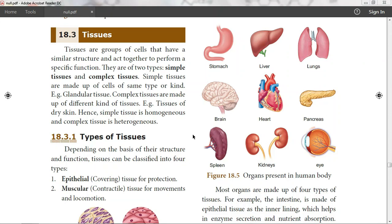18.3 Tissues. Tissues are groups of cells that have a similar structure and act together to perform a specific function. They are of two types: simple tissue and complex tissue.